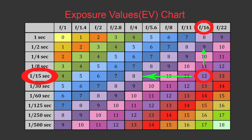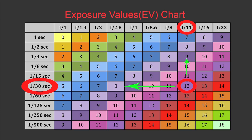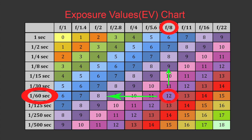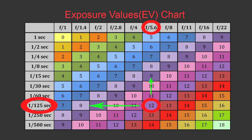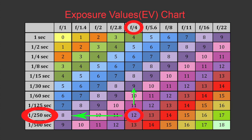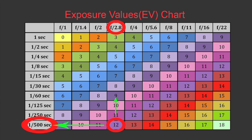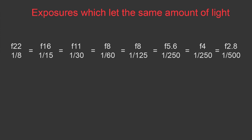So our exposure combinations for number 12 would be: f/22 with shutter speed 1/8 of a second, f/16 with shutter speed 1/15 of a second, f/11 with shutter speed 1/30 of a second, f/8, f/5.6 at 1/125 of a second, f/4 at 1/250 of a second, and f/2.8 at 1/500 of a second. All those exposures are equivalent exposures, which means they add the same amount of light into the camera.